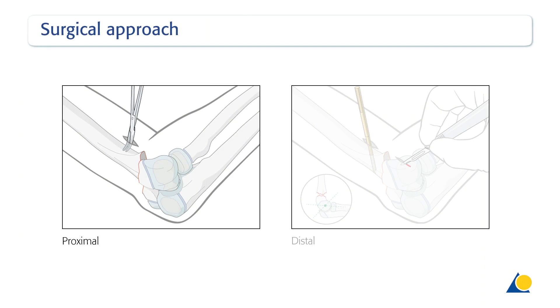Clinically, a 1 to 1.5 cm skin incision is made at the planned insertion point and deepened by blunt dissection with a small artery forceps until the lateral border of the humerus can be felt.